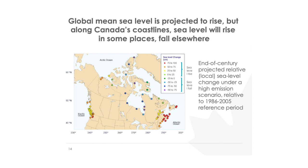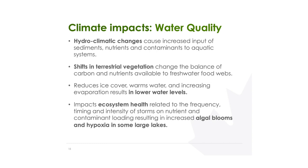There are implications for things like water quality, related to changes in the seasonality of runoff, water temperature, and the amount of sediment and nutrients in the water — all affecting water quality in addition to water quantity. Similar effects occur in large lakes, where warming and increased nutrient availability is leading to algal blooms and hypoxia.